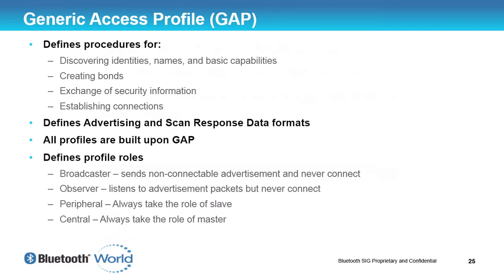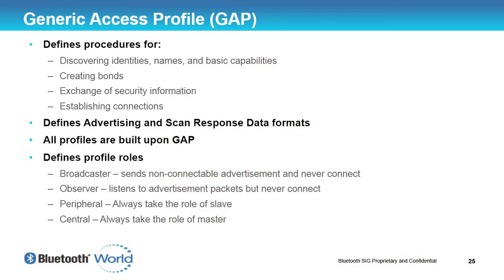Above L2CAP is the generic access profile, which is shared between basic rate and LE, and is fairly critical to how Bluetooth has been successful. It defines that every single Bluetooth device has to be able to discover other devices, pair and bond with another device for a long-term relationship, handle security information, and establish connections. The alternative would be that every single profile would have to define its own way of doing discoverability and security — but Bluetooth did it right by using a single generic access profile.